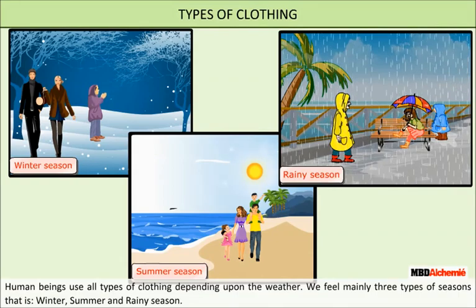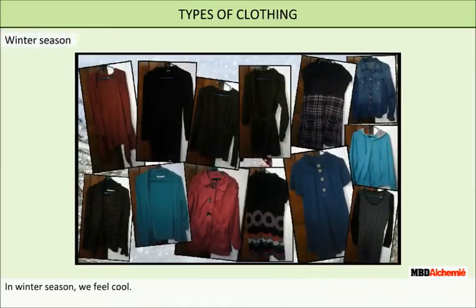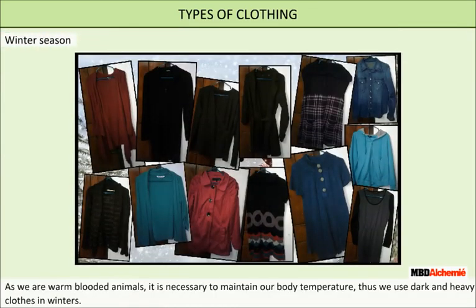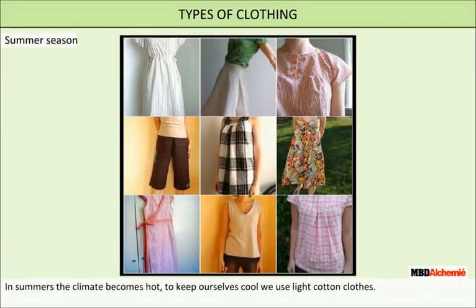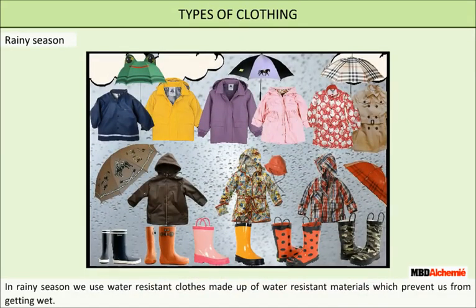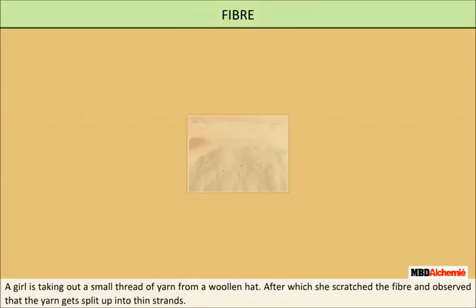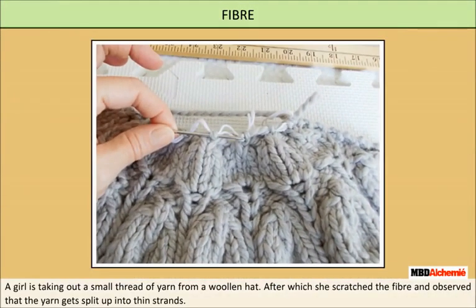Types of clothing: human beings use all types of clothing depending upon the weather. We experience mainly three types of seasons — winter, summer, and rainy season. In winter, as we are warm-blooded animals, it is necessary to maintain our body temperature, so we use dark and heavy clothes. In summer, the climate becomes hot, so we use light cotton clothes. In rainy season, we use water-resistant clothes which prevent us from getting wet.